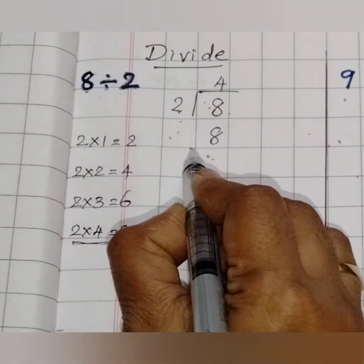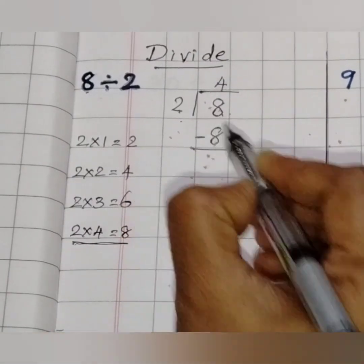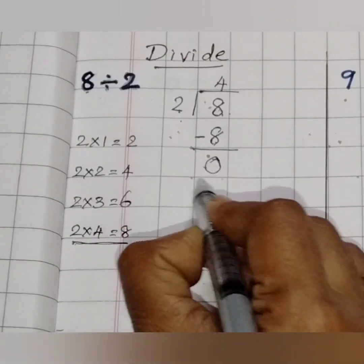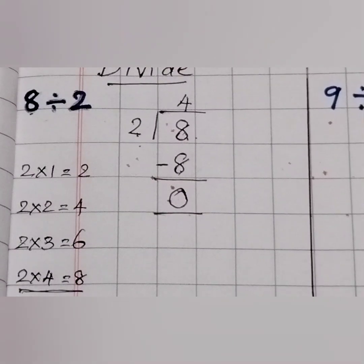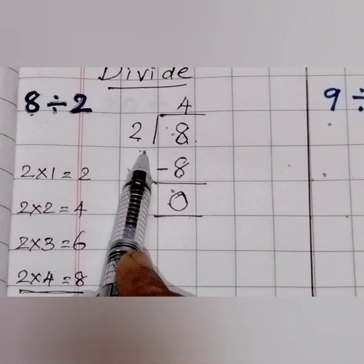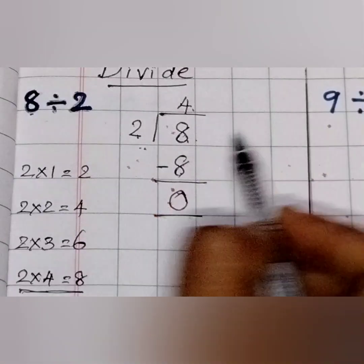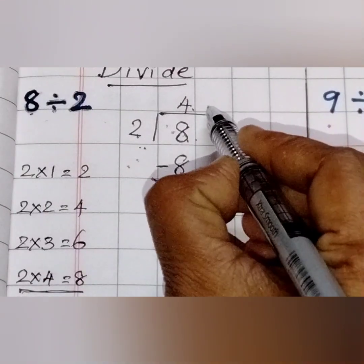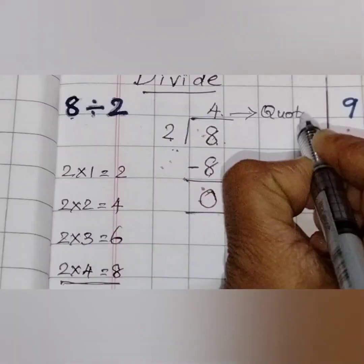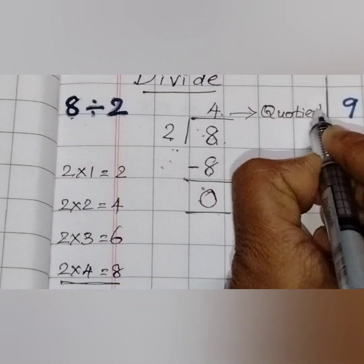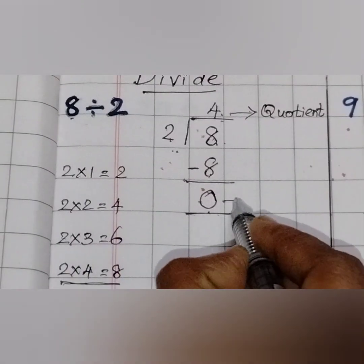Now we have to subtract. What is 8 minus 8? It is 0. Hence the division is complete. Our answer is 4. 4 is the quotient — the result of division. And the 0 is the remainder.